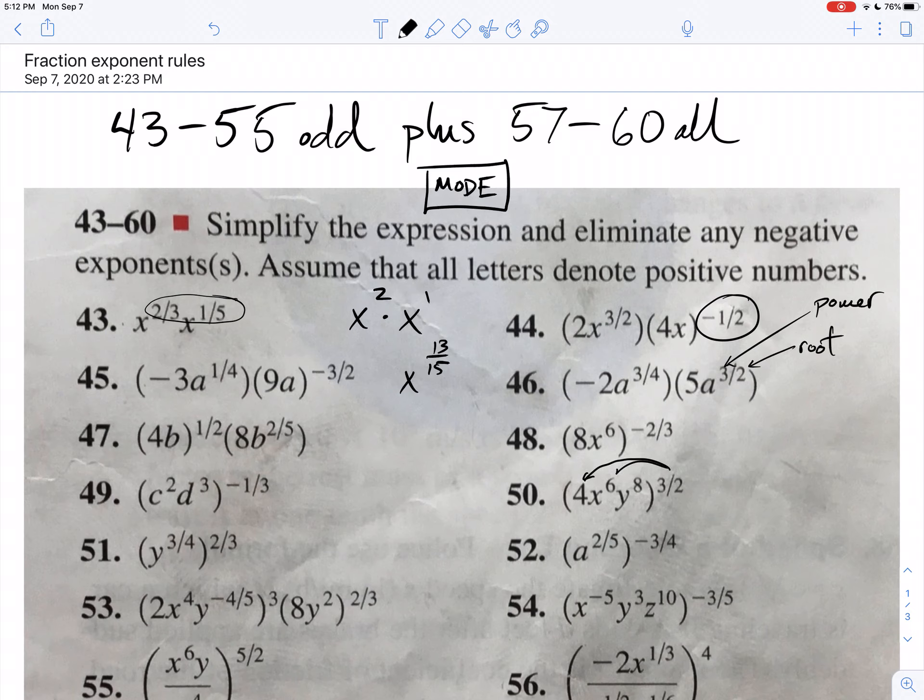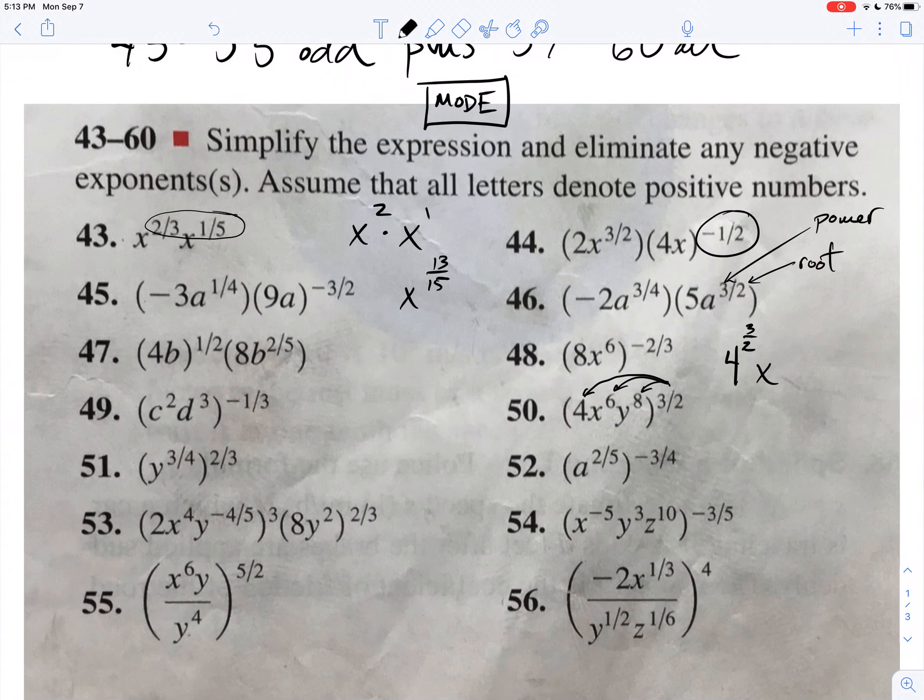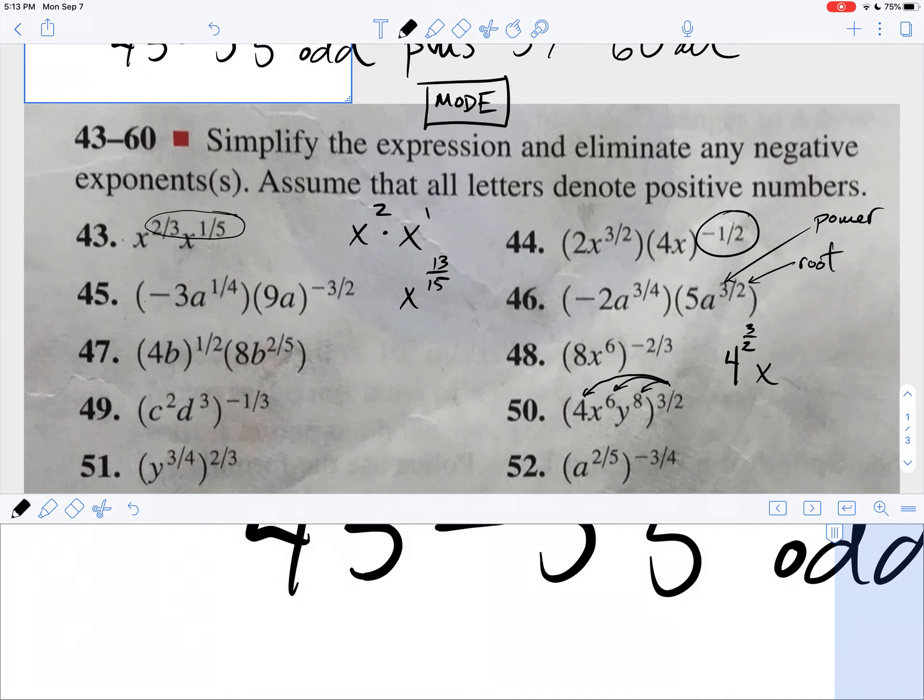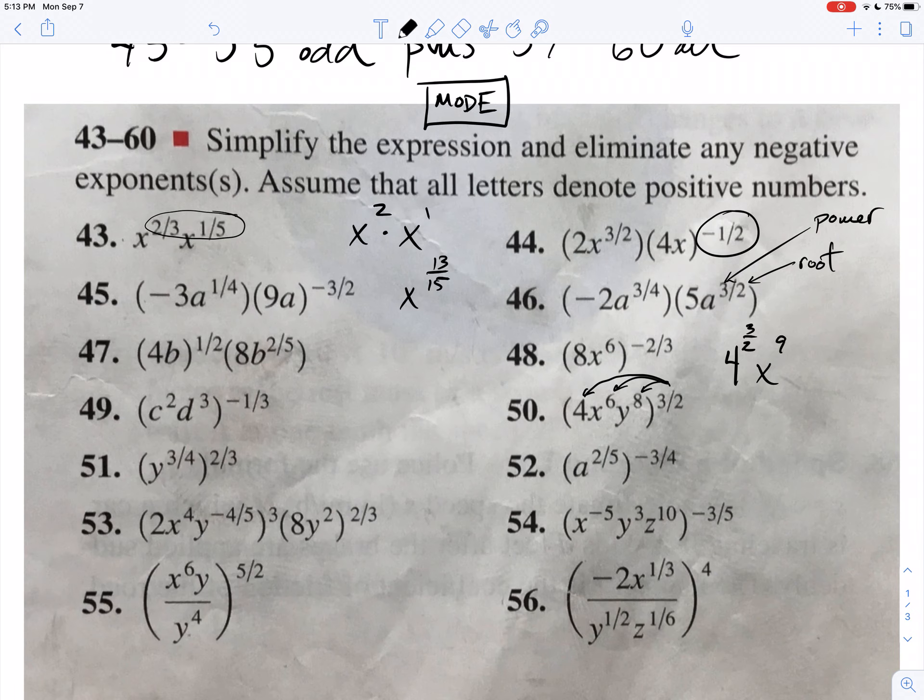This is the power rule. Now, when I multiply powers, remember, it's not going to be 4 times 3 halves. It's going to be 4 to the 3 halves. It's going to be x to the 6th times 3 halves. So, you can double check me, but if I do that, I get x to the 9th. And then, 8 times 3 halves, that's just 12. I can do that on a calculator, too. But, here's what I wanted to get at.